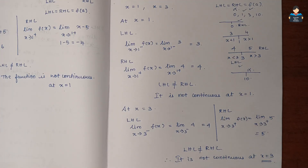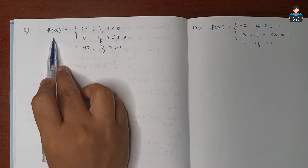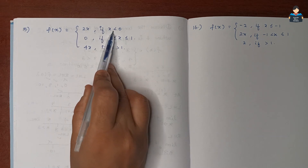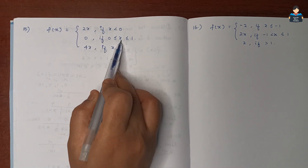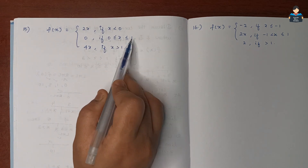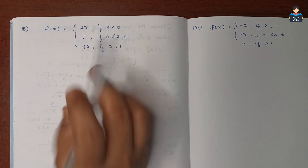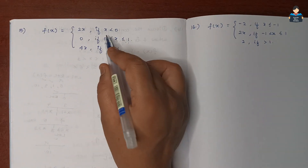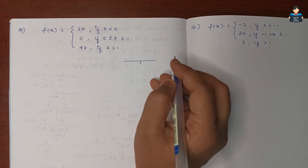Question Number 15: f(x) is defined as 2x if x is less than 0; 0 if x is greater than 0 and less than or equal to 1; and 4x if x is greater than 1. There are two critical points: x = 0 and x = 1. We will compute LHL and RHL at both points.